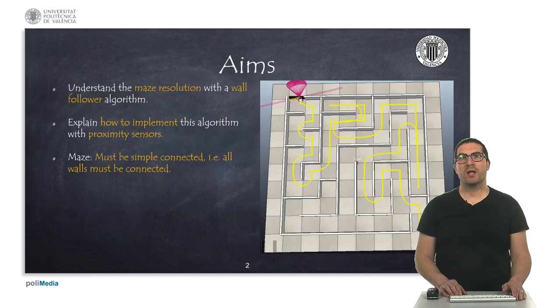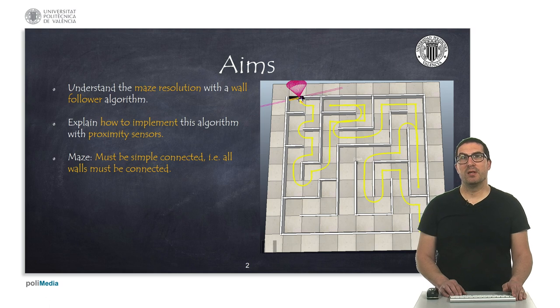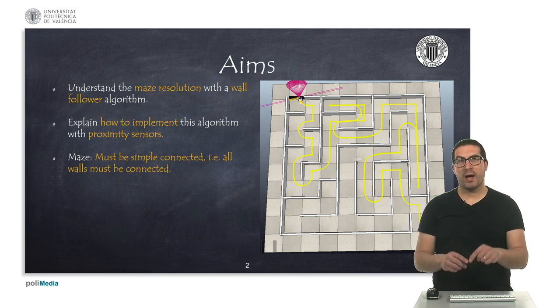The aim of the presentation is to understand how to solve mazes using a wall-following algorithm and explain how this algorithm can be implemented using proximity sensors. One requirement for the maze is that it must be simply connected. That means that all walls need to be connected without aisles.